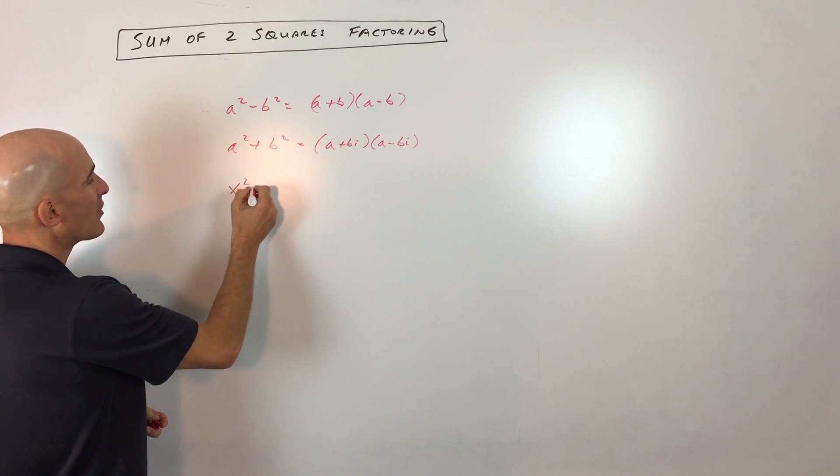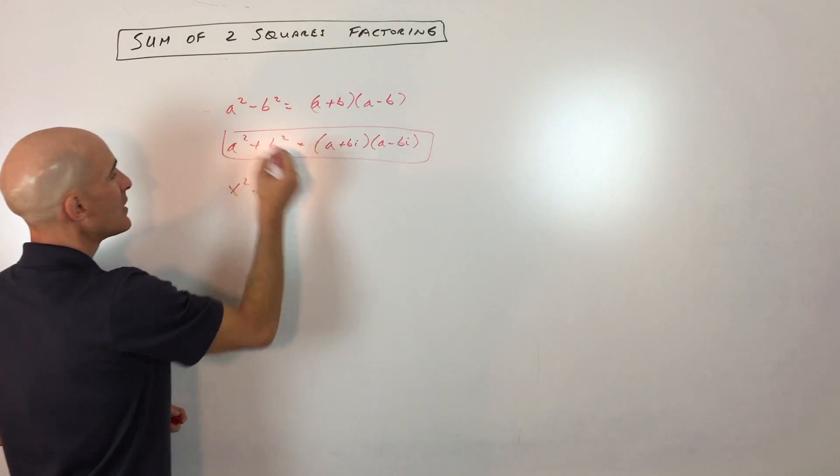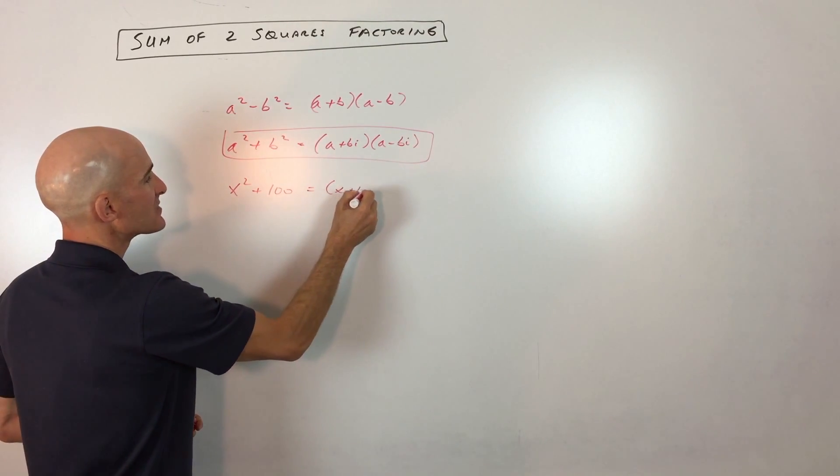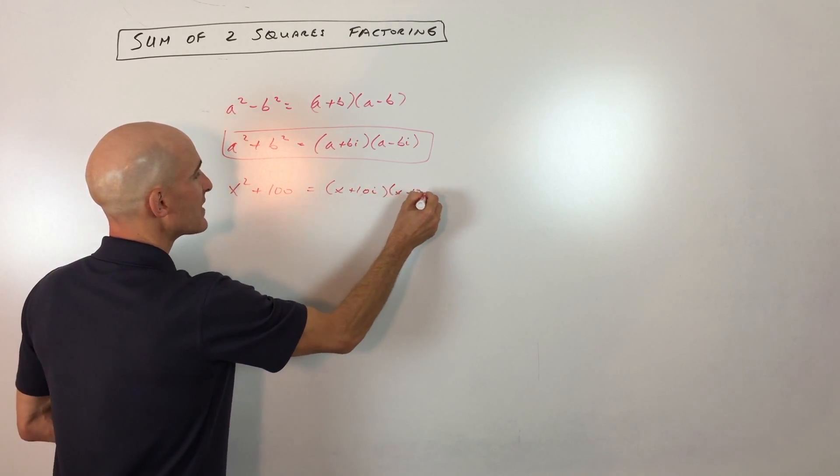So let's say we wanted to factor x squared plus 100. So if we use this formula right here, you can see this should factor as x plus 10i times x minus 10i, right?